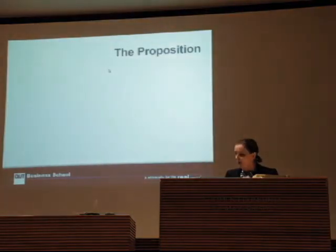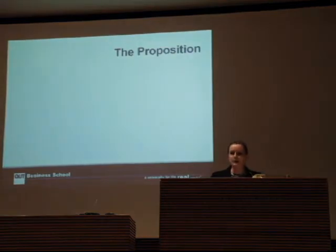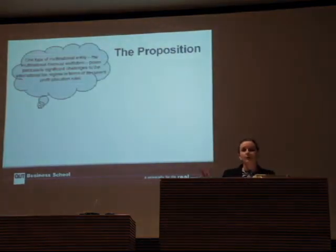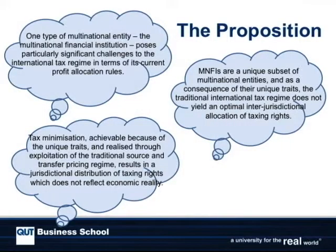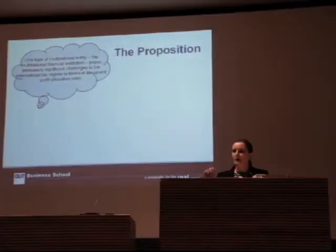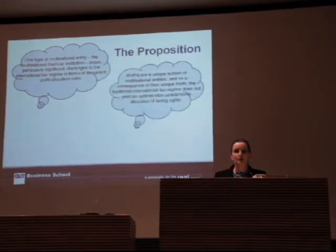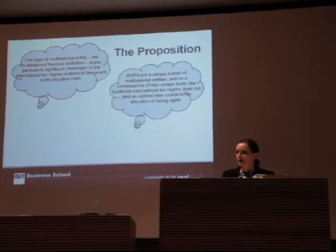So what am I proposing? My propositions are, first of all, that there's one type of multinational entity — the multinational financial institution — which poses particularly significant challenges to the current international tax regime in terms of the profit allocation rules. When I say profit allocation rules, I'm actually talking about source and transfer pricing rules. I'm only going to address the transfer pricing rules here today.